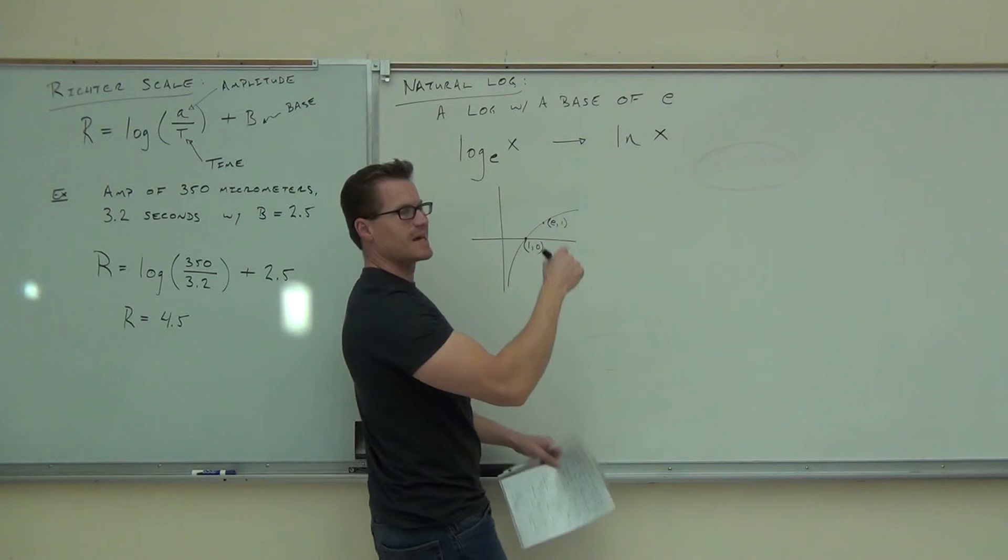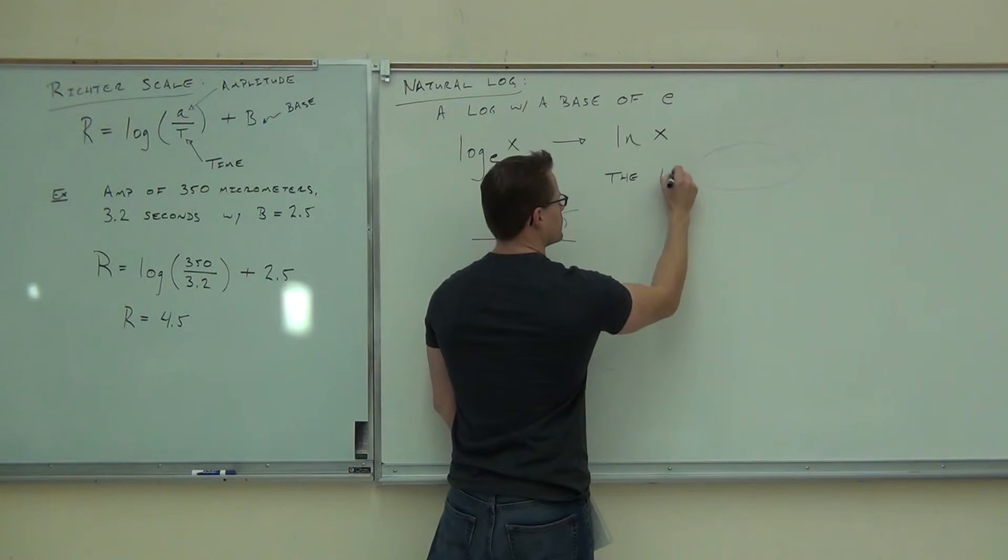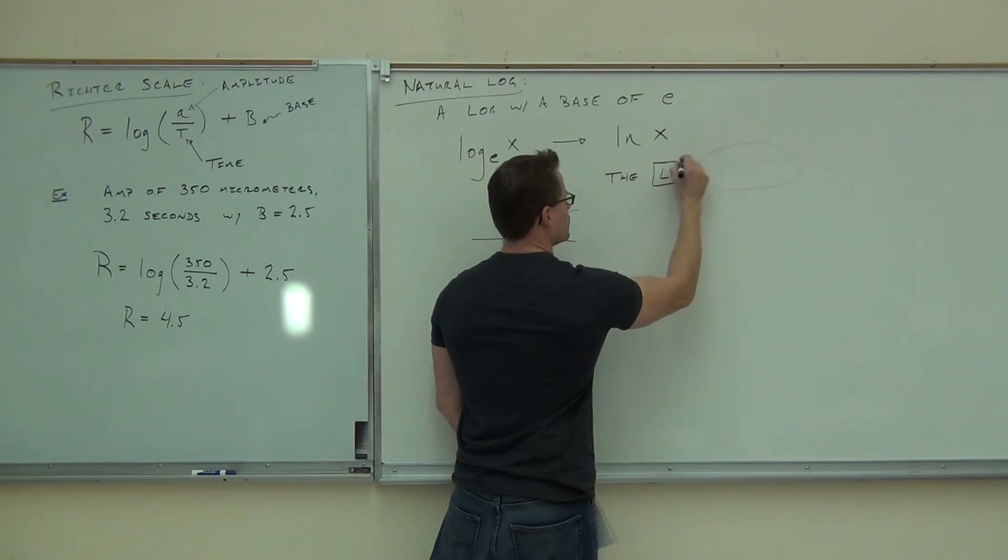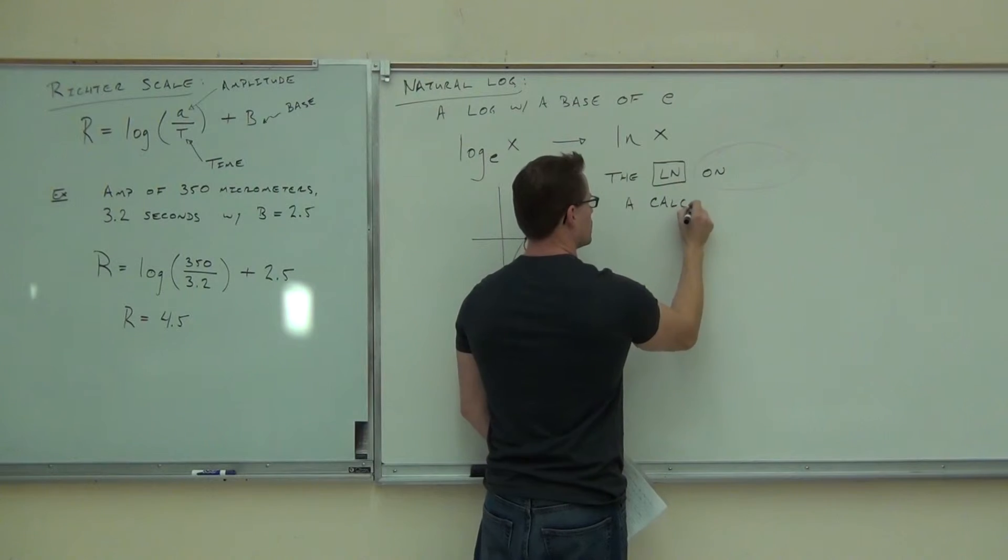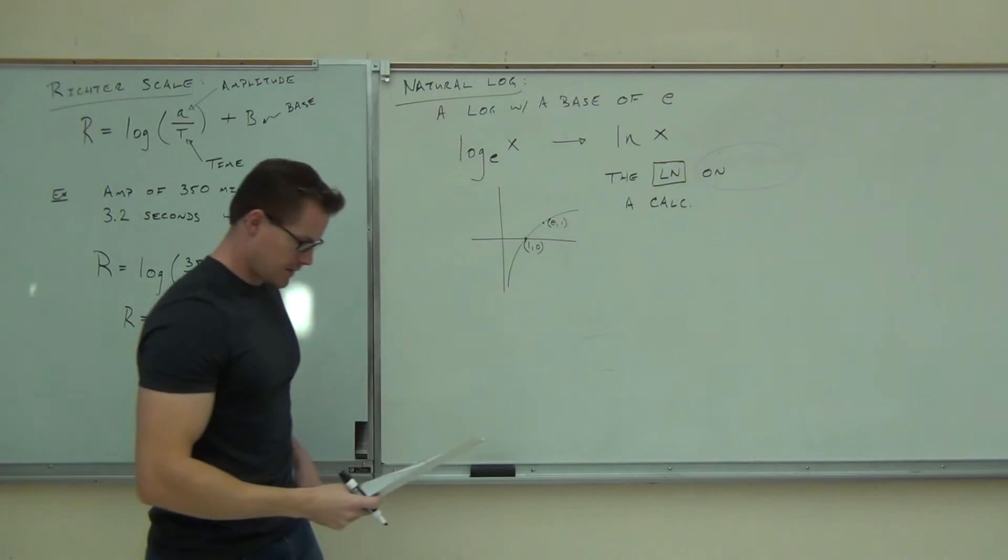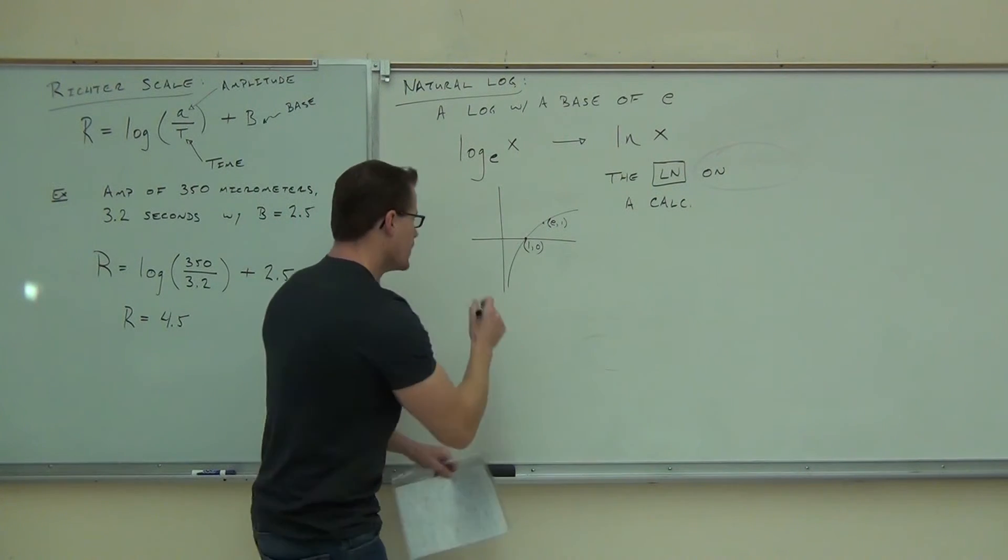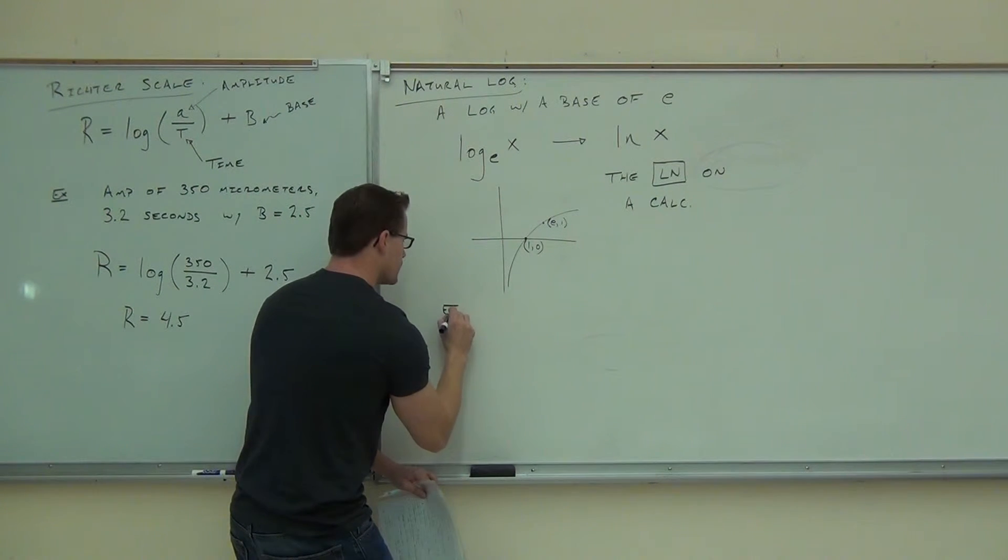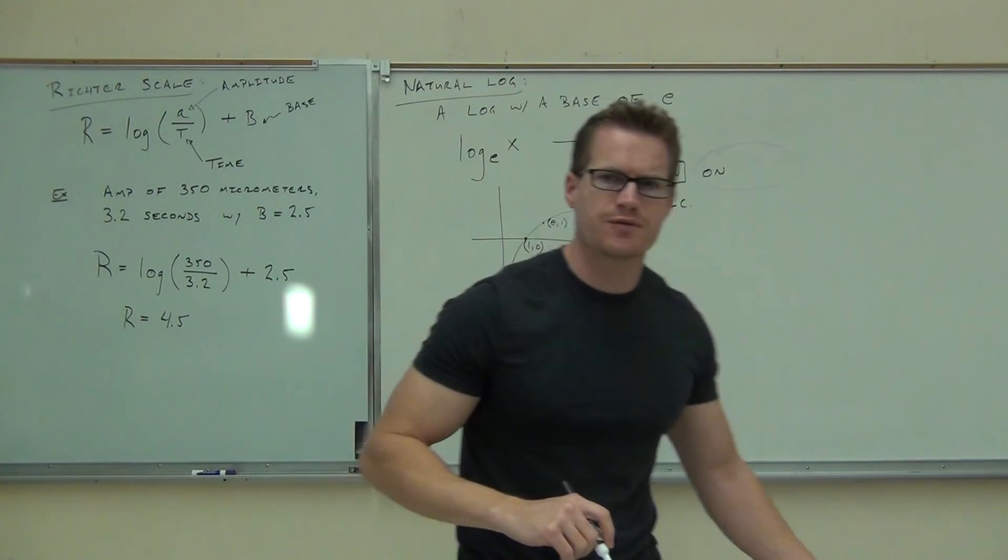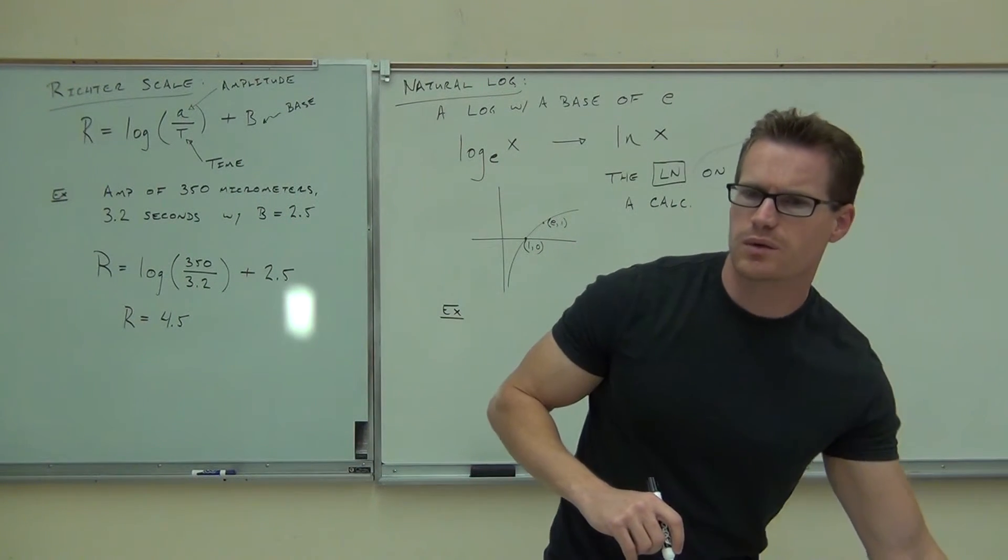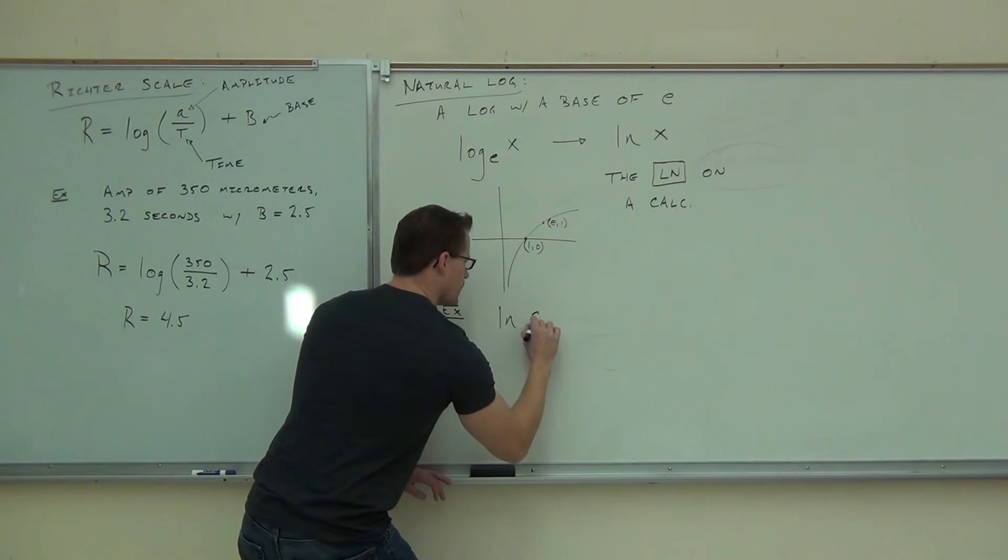So it still looks exactly the same. This, by the way, is the LN on your calculator. Let's see if we can find some of these things. Can you do, just like we did with log, can you see if you can find, what numbers did I give you for the logarithm? What were those? 21 and 15? Yeah. Okay. Let's see if we can find the same ones.